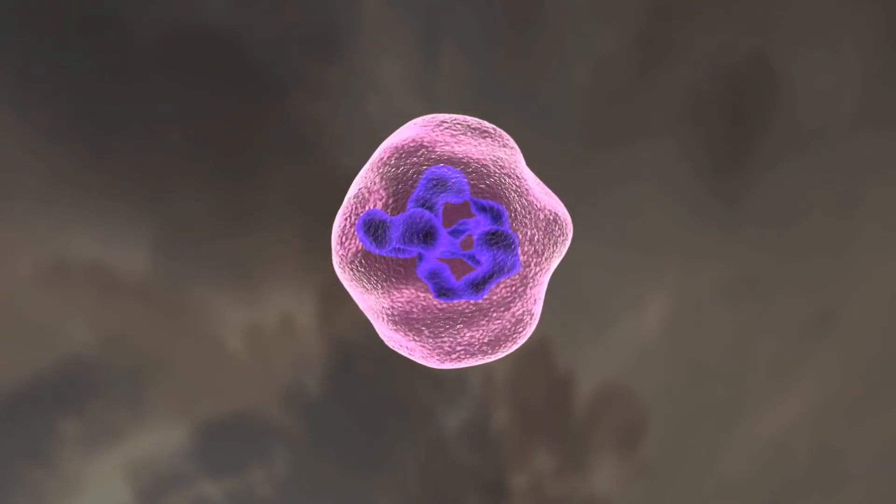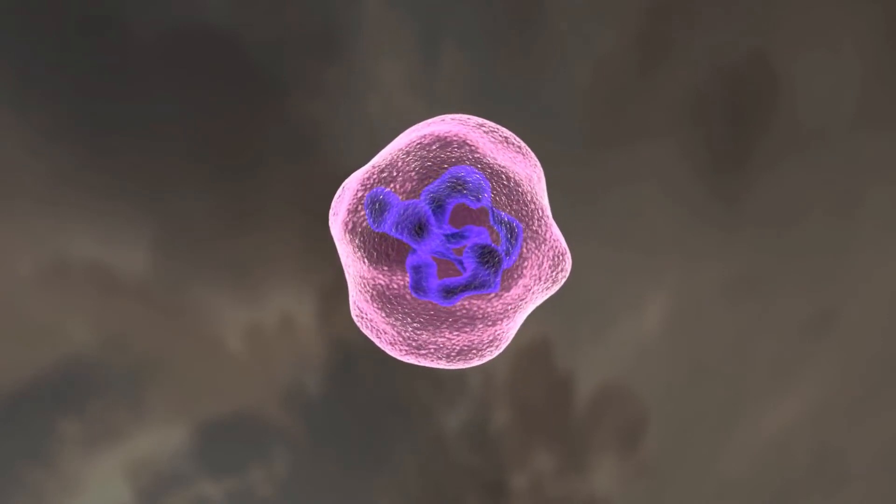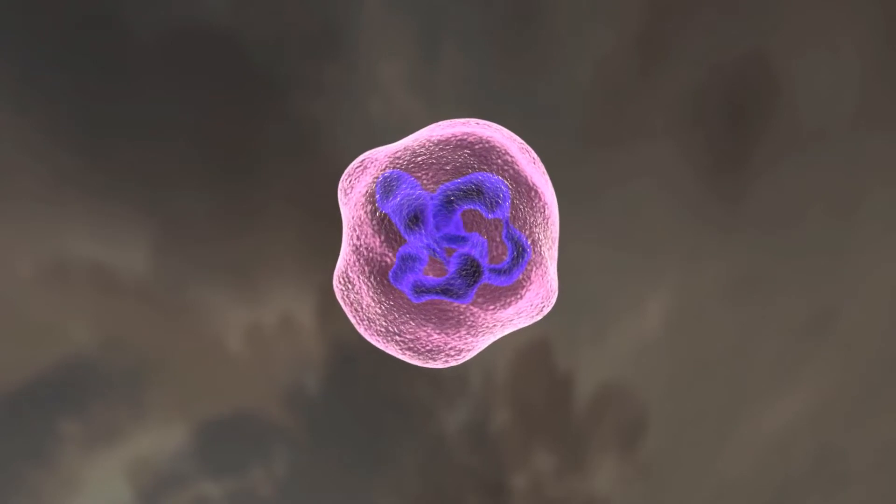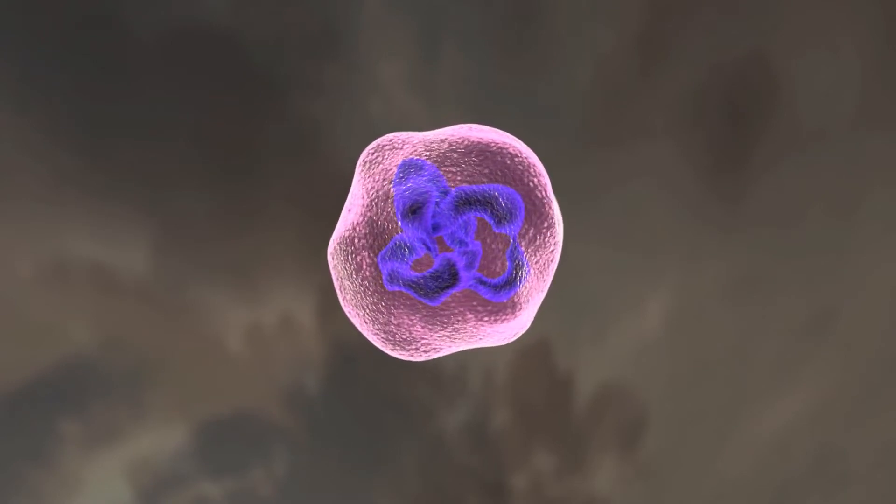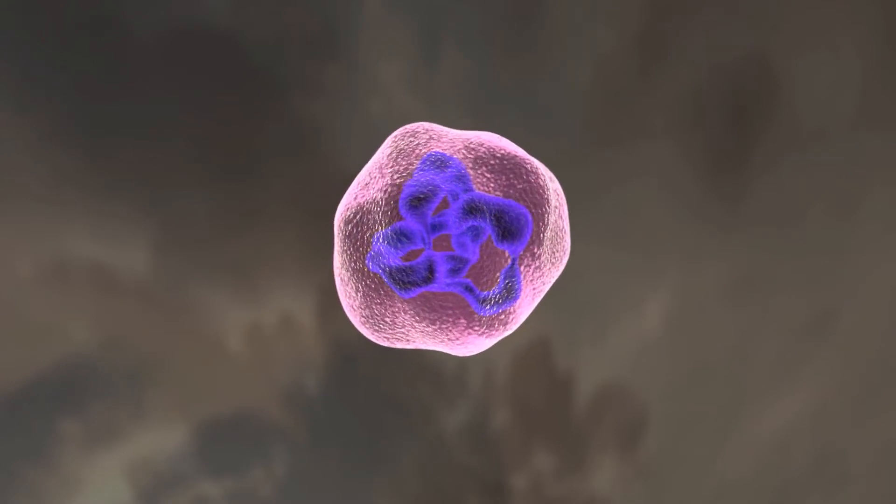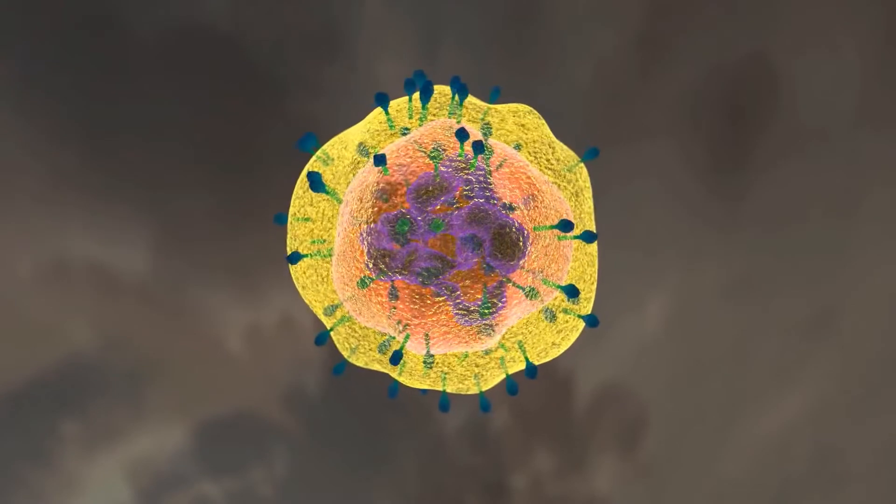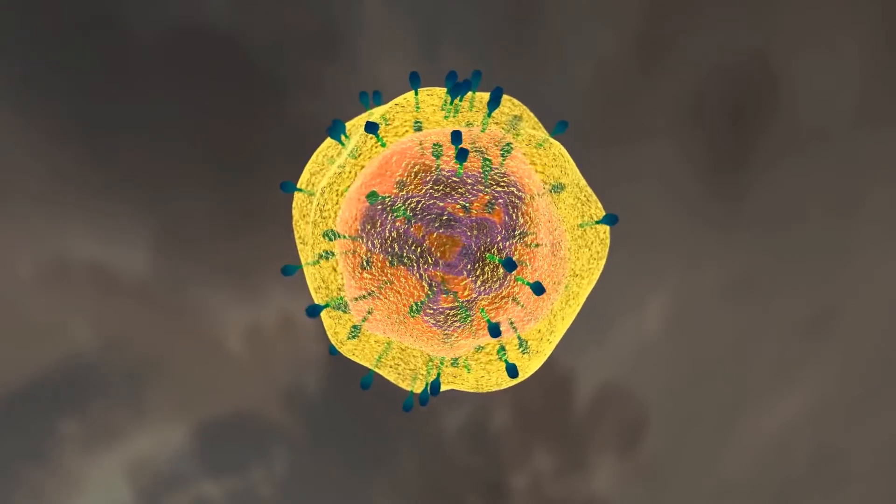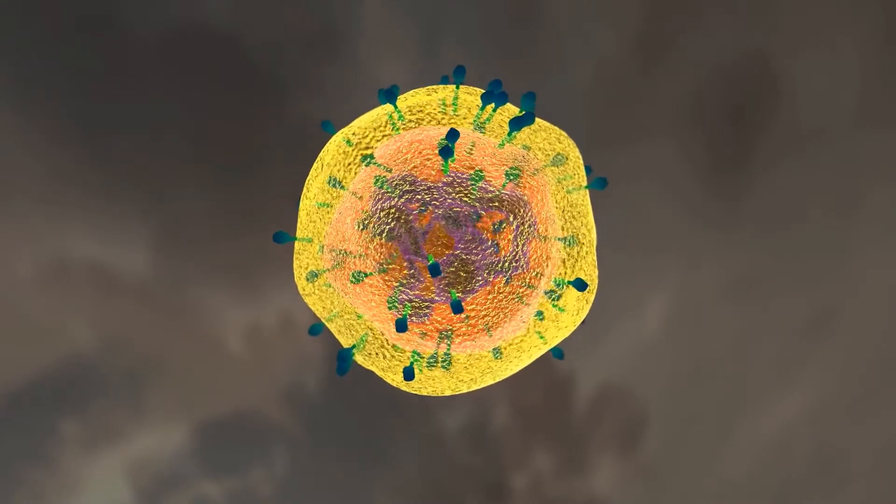Viruses are made of three major components: nucleic acids needed for reproduction, protein coatings to protect the nucleic acids, and some viruses have lipid coatings that surround the protein coatings.